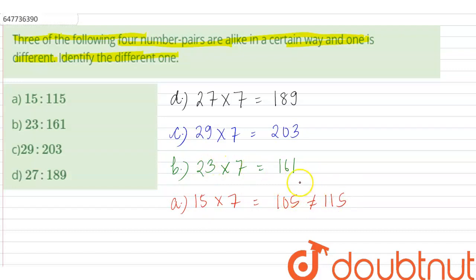In these four options, option A will be the odd one out, that is 15 is to 115, because with the rest of the numbers, multiplying by 7 gives us the second number, but this doesn't work with 15. So the answer is A, 15 is to 115. Thank you, students.